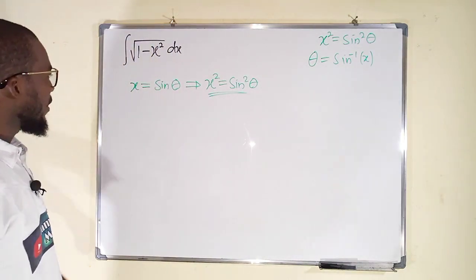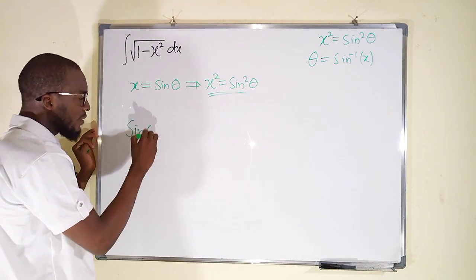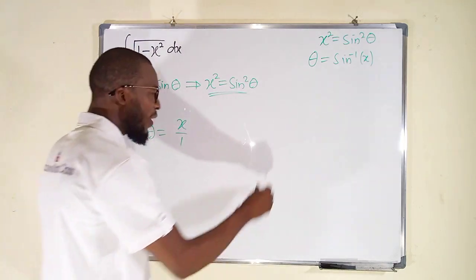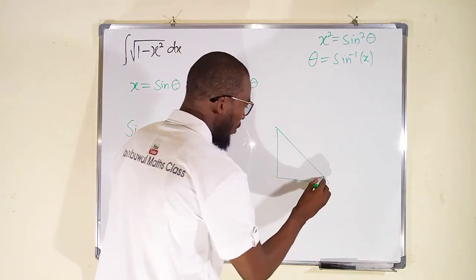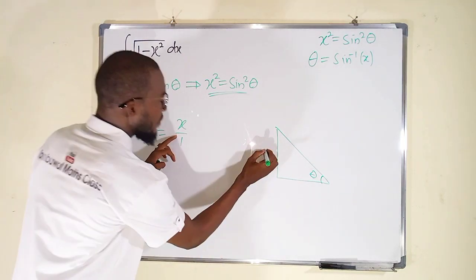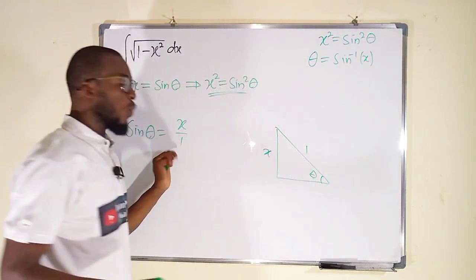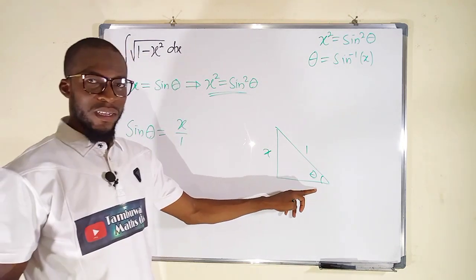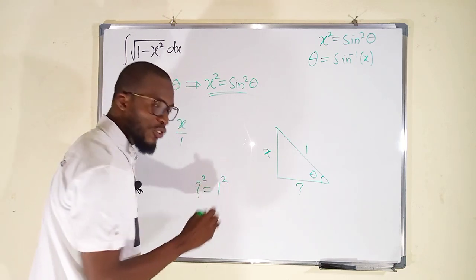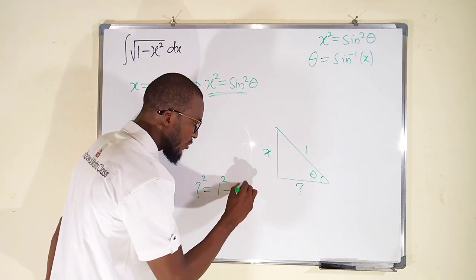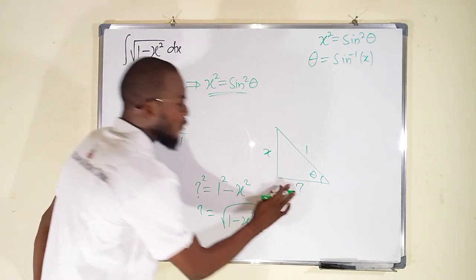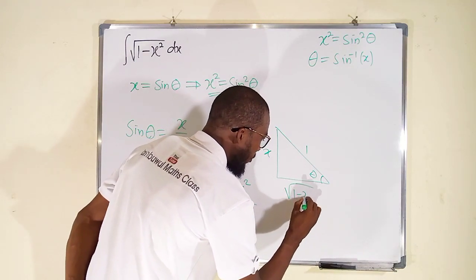Again, we need other things. If sine theta is equal to x, we can rationalize it as x over 1. What is cos theta? We can find that on a right angle triangle: if this angle is theta, remember sine can be obtained by taking the ratio of the opposite and the hypotenuse. This is the opposite, and this is the hypotenuse which is 1. Now, how can we obtain the adjacent side? This question mark squared is equal to hypotenuse squared which is 1, minus the opposite squared which is x squared. And this question mark is equal to square root of 1 minus x squared.